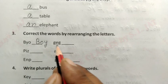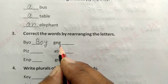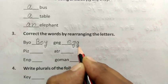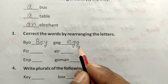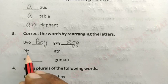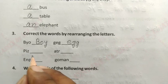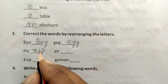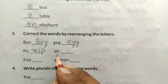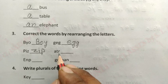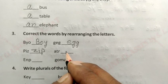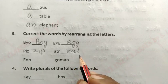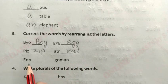इसी प्रकार से G-E-G लिखा हुआ है, इसे सही करने पर बनेगा E-G-G = Egg. P-I-Z लिखा हुआ है, इसे सही करने पर बनेगा Z-I-P = Zip. A-T-R लिखा हुआ है, इसे सही करने पर बनेगा R-A-T = Rat.